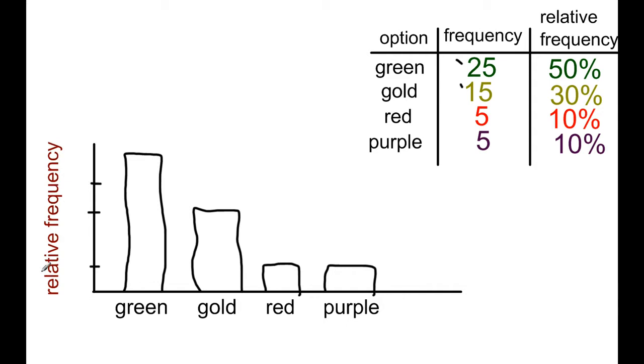Or we could label it with relative frequency. And then at each of our markings here, we would label it with the percentage. So we would label this as 50% and so forth all the way down in order to get our relative frequency.